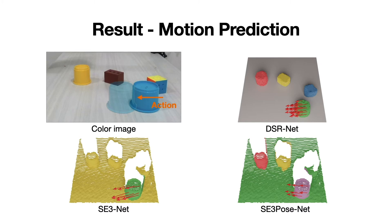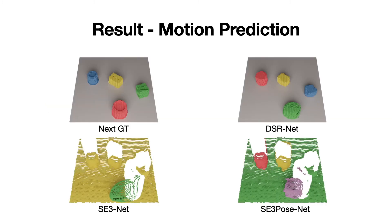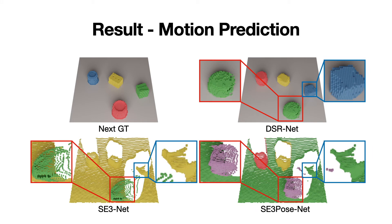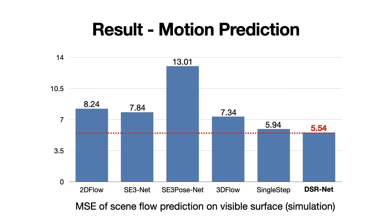Furthermore, SE3Net can only distinguish the moving object, and SE3POSENet may miss small objects. Here is the next state prediction after warping. DSR is able to more accurately predict the next state with better motion and shape estimation. Quantitative results also indicate our DSR model can achieve better performance on motion prediction.